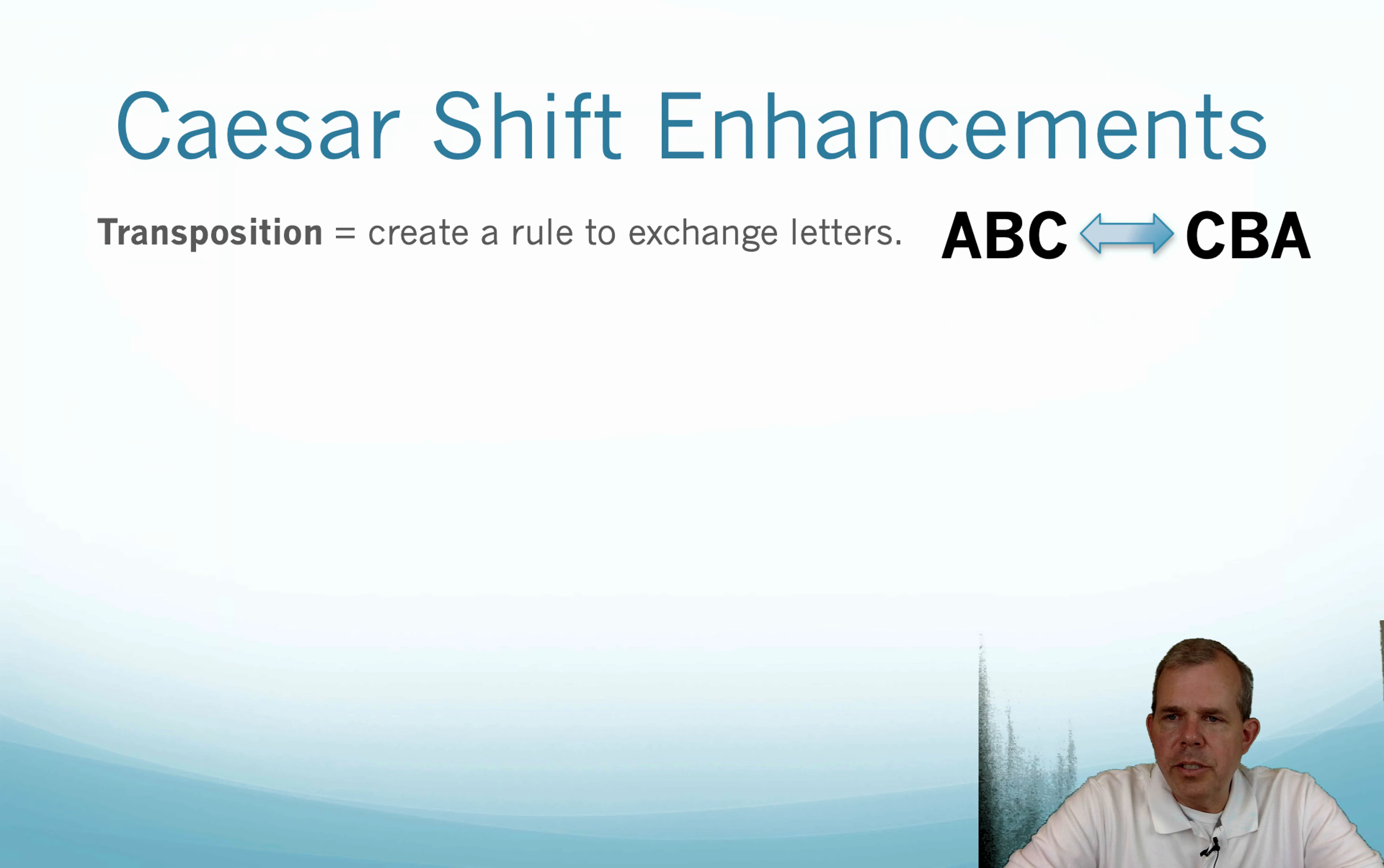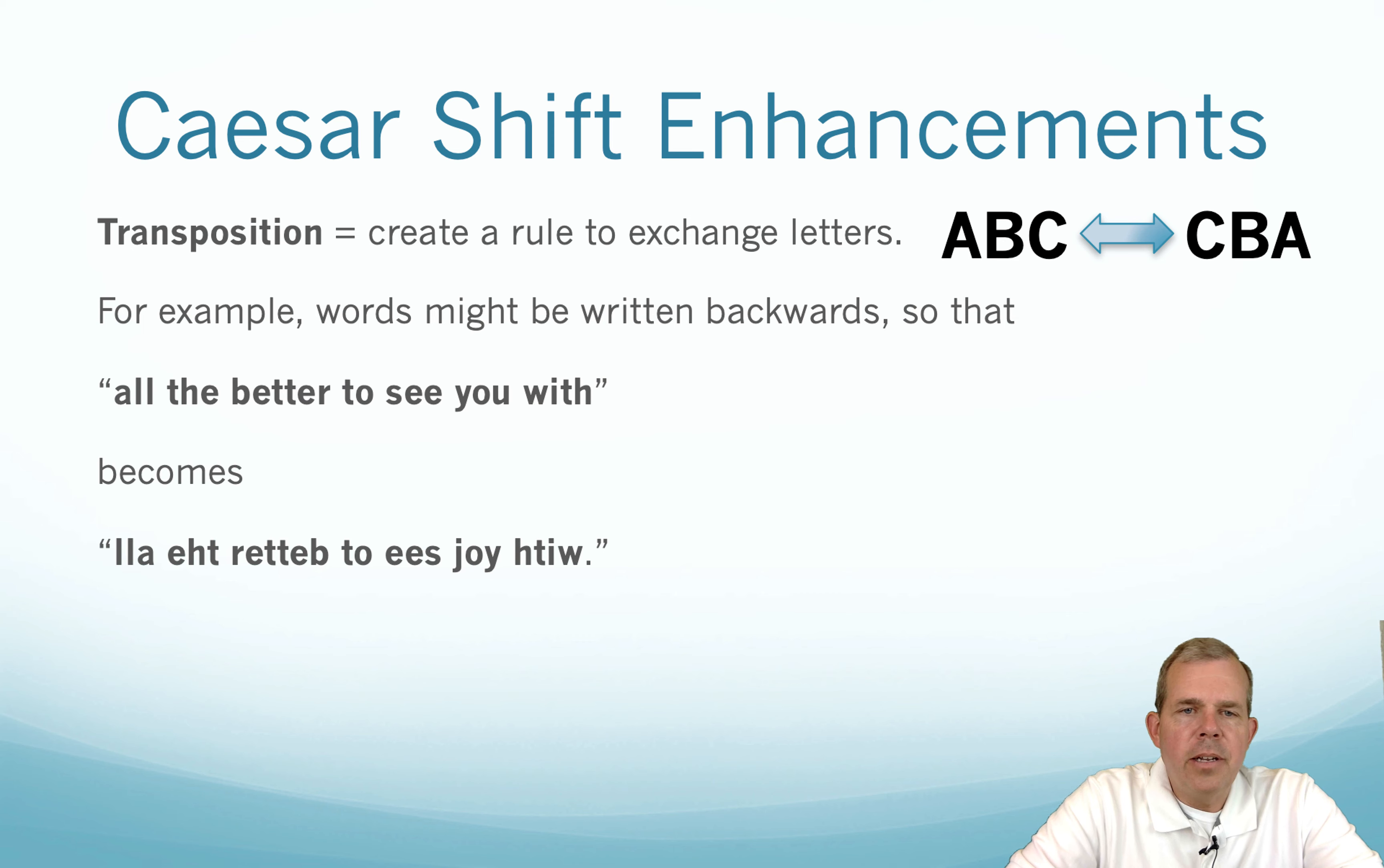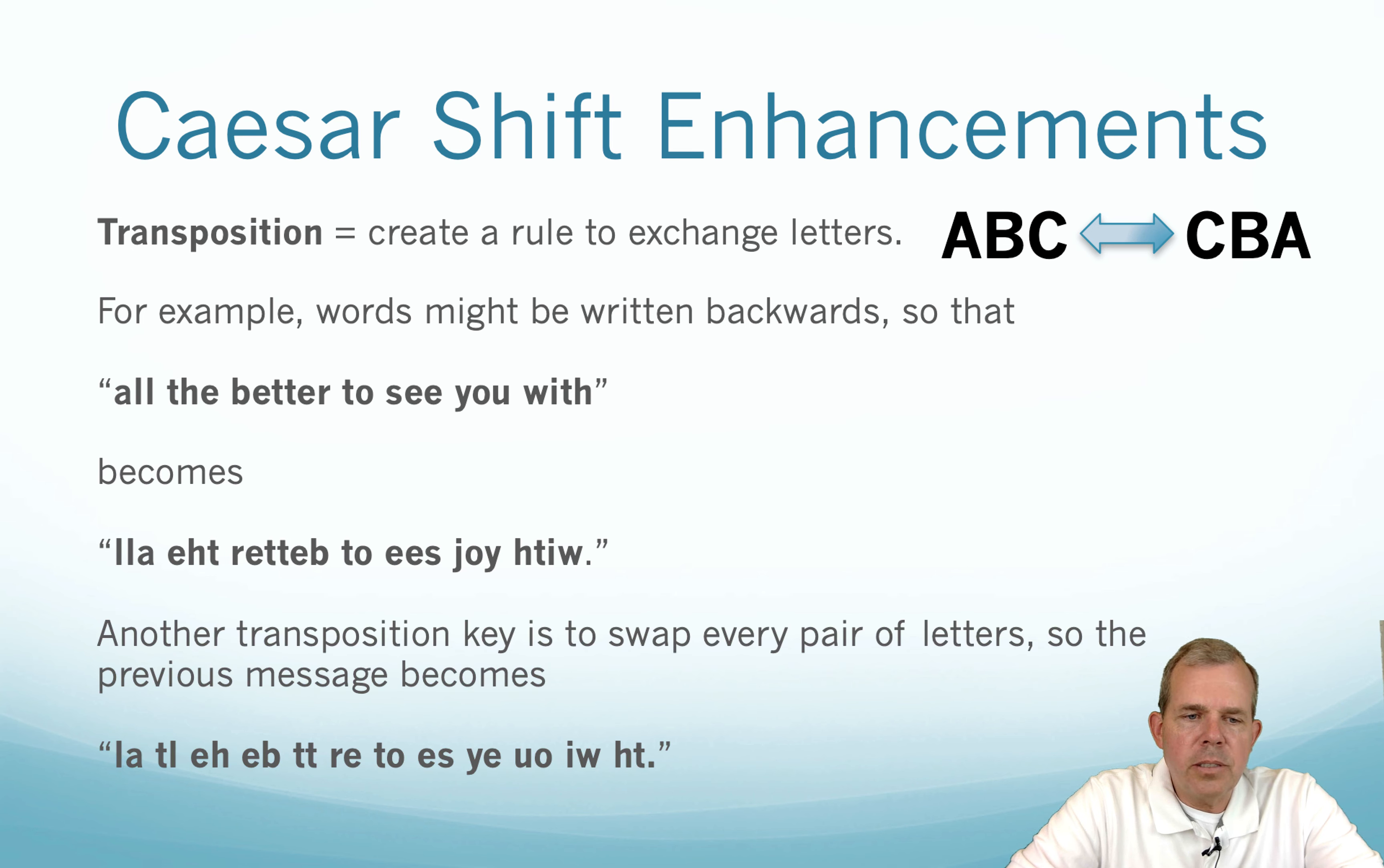So some of the key ways to actually encode these were to use transposition in the old days. Transposition is just order the letters differently. For example, if you were to write down the phrase, all the better to see you with, it would become reversed if you reversed each word. And so then, after you've reversed the words, then you send it through the Caesar shift. Or you might have another way to say, let's just take each pair of letters and flip those, and then send them through the Caesar shift. So there are ways that you could use transposition that would make your Caesar better. And so for many years, this was the best we could do.